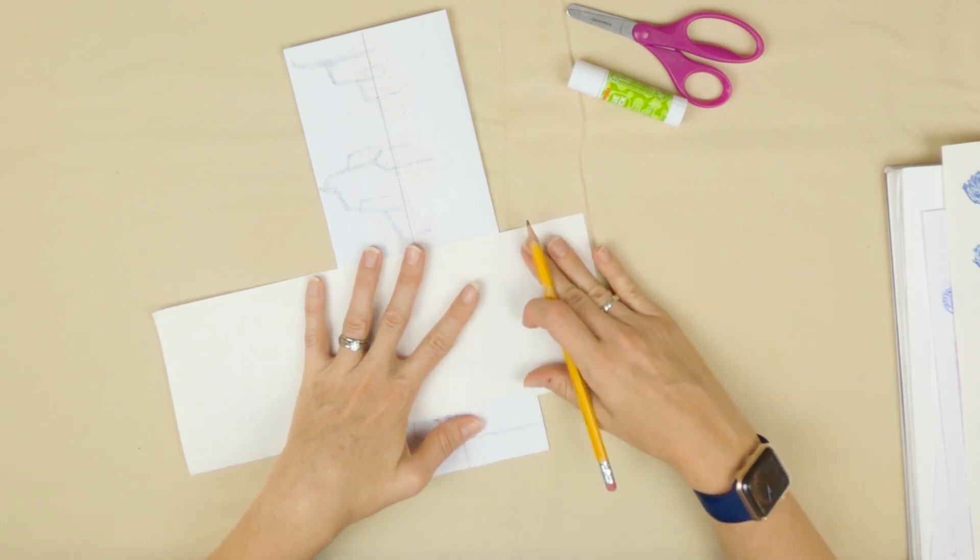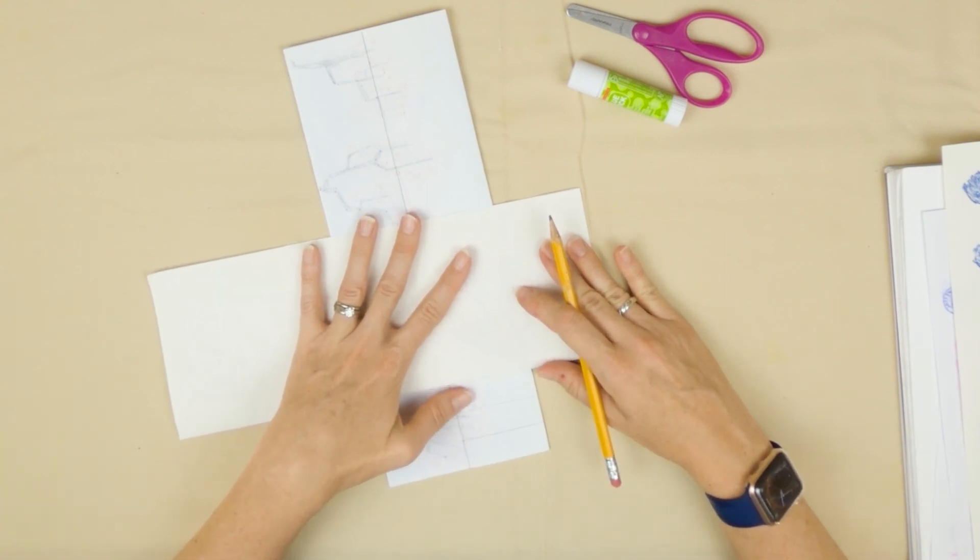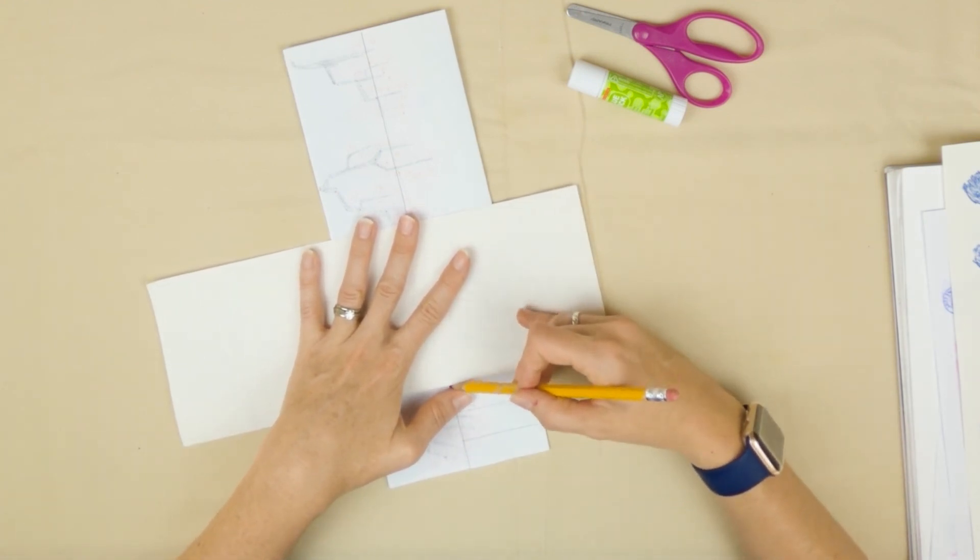If you have a ruler, you can just mark every half inch or inch, doesn't matter as long as it's consistent.